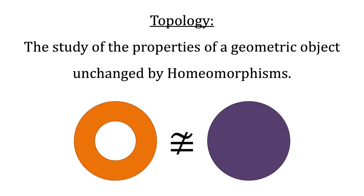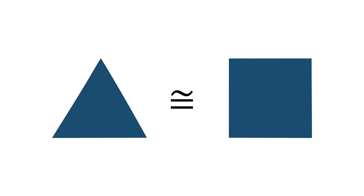We use the notation of an equal sign with a squiggly line over it to say that two objects are not homeomorphic — not the same shape. In contrast, we can say that a triangle is homeomorphic to a square. We can reshape a triangle into a square and back again — the two are homeomorphic.